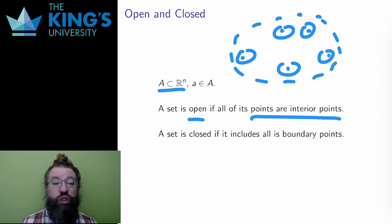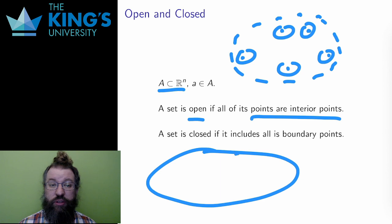Open sets are usually drawn with dotted or dashed edges to indicate that they don't contain their boundaries. And a set is closed if it contains all its boundary points. And this is usually drawn with a solid line to indicate that the boundary is part of the set.